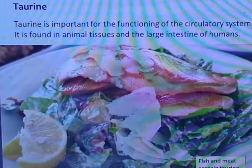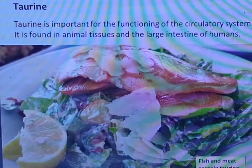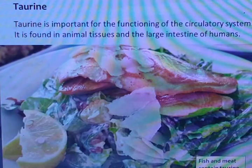Taurine is important for the functioning of the circulatory system. It is found in animal tissues and the large intestine of humans.